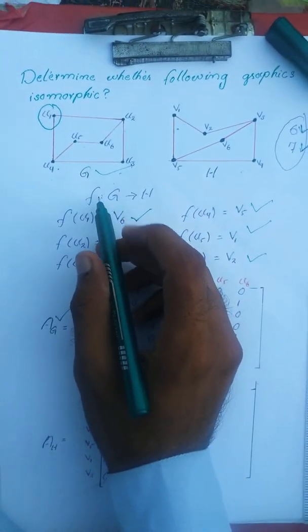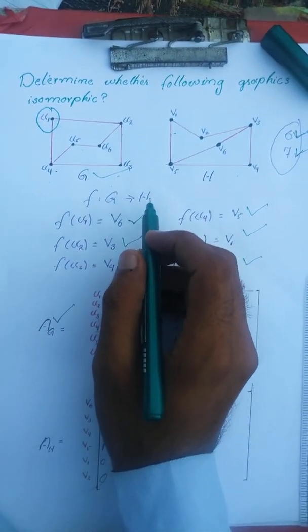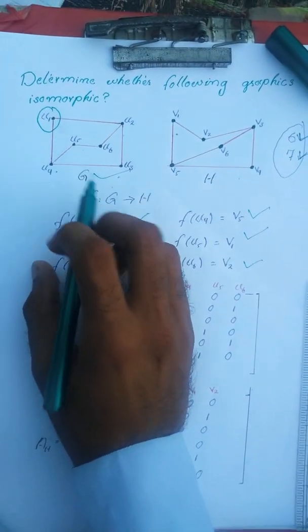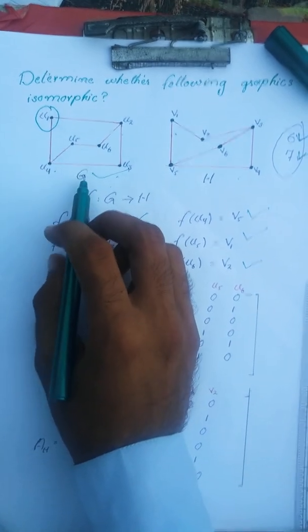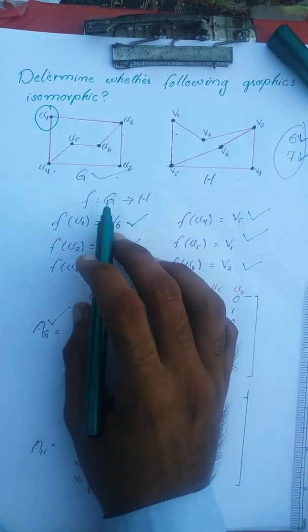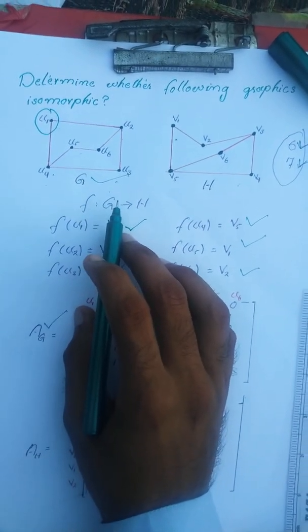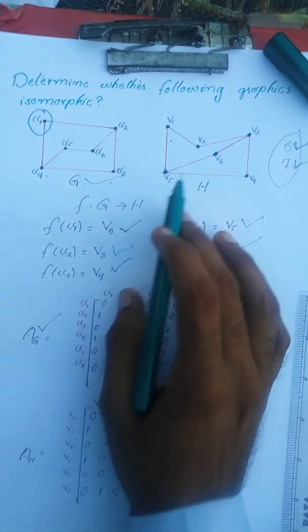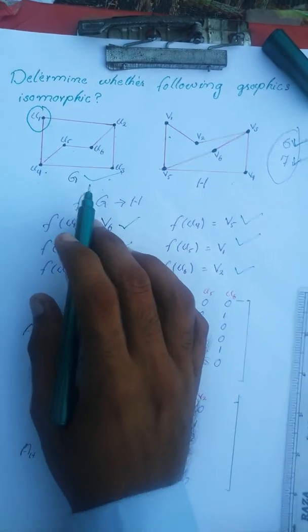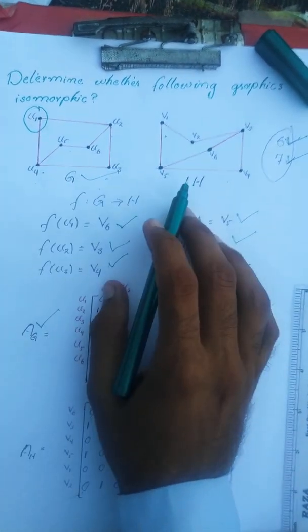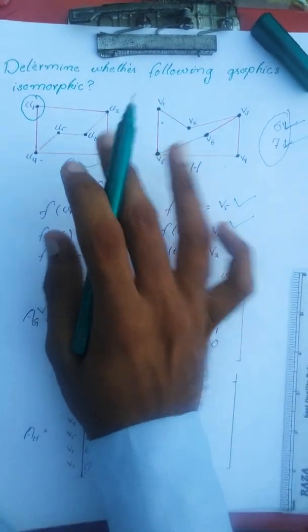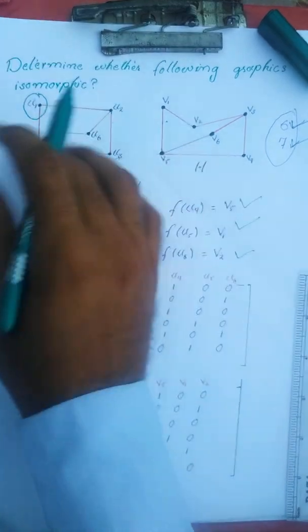Let's define a function f from the vertices of graph G to the vertices of graph H. If f preserves the edges and if each of the vertex in graph G has an image in graph H, means f possesses 1 to 1 and onto relation from G to H, and finally if we create adjacency matrix of graph G and graph H, if they are identical to each other then we will say that these two graphs are isomorphic.